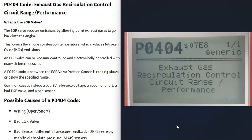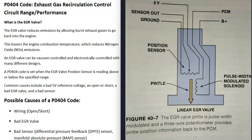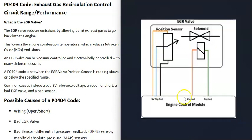The first possible cause of a P0404 code is the wiring going to the EGR valve. If there's anything wrong with the wiring — an open or a short — that's going to cause problems. You'll need to get a wiring schematic or wiring diagram to know what's going on. You can test those wires to make sure there are no opens or shorts, confirm there's a good ground wire, and check for a good five-volt reference voltage.